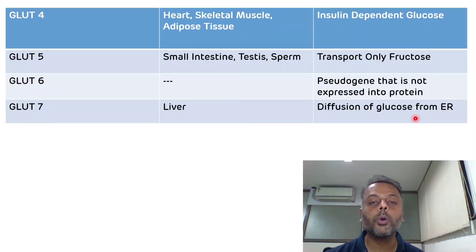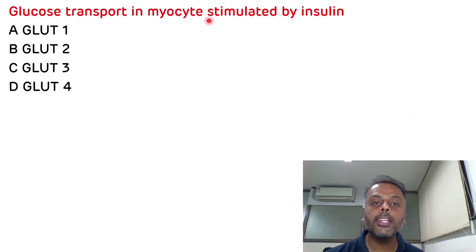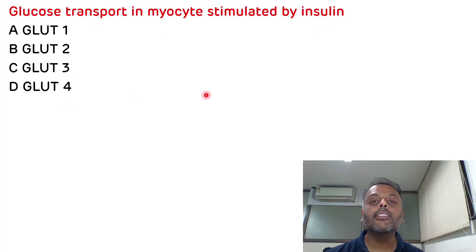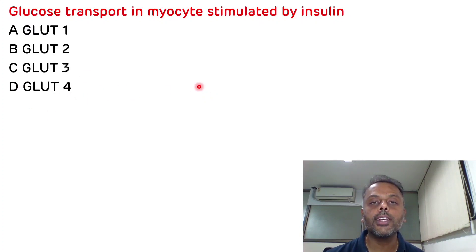Now we will see multiple choice questions. The first question is: glucose transport in myocytes stimulated by insulin — which glucose transporter is responsible? As discussed, the three insulin-dependent glucose transporters are GLUT4, GLUT8, and GLUT12. The correct answer is GLUT4.